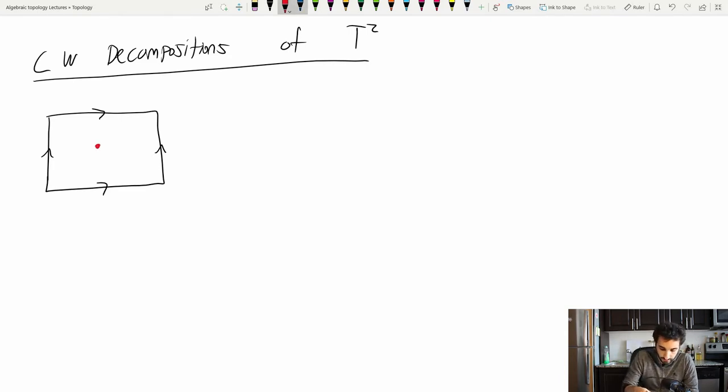Let's look at this CW decomposition. I have a single vertex here in the middle. One edge coming out like this and one edge coming out like this. So now there is one vertex. There are two edges. The up down edge and the left right edge. And how many faces are there? This could be a little tricky but think about it. This face is the same as this face, this face, and this face.